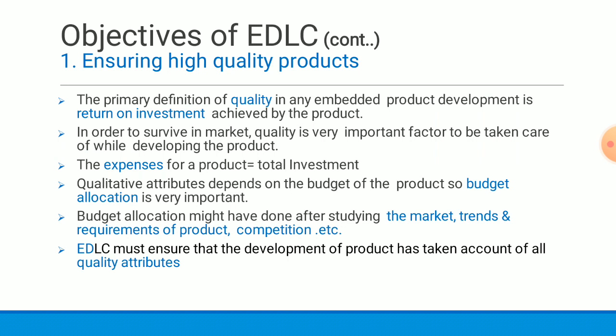The first objective is ensuring high quality products. The primary definition of quality in embedded product development is the return on investment achieved by the product. Quality is very important to survive in the market. The total investment includes initial investment, developer recruiting, training, and infrastructure investments.